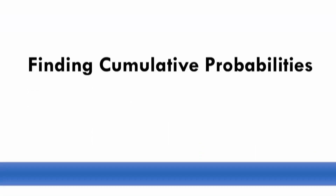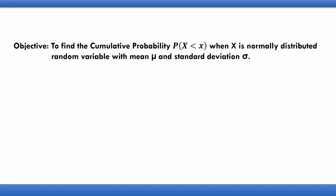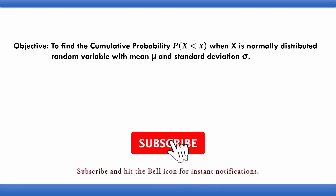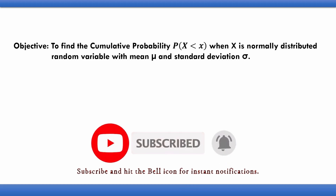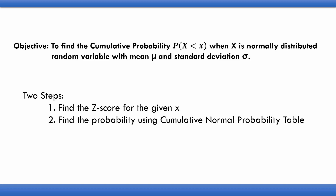Let's start the topic: cumulative probabilities. The objective is to find the cumulative probability P(X < x), where X is a normally distributed random variable with mean mu and standard deviation sigma. To get this cumulative probability we have two steps. The first is to find the Z-score for the corresponding value x, and the second is to find the probability using the cumulative normal probability table.